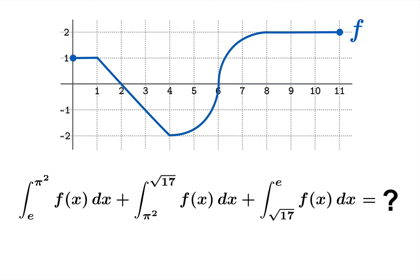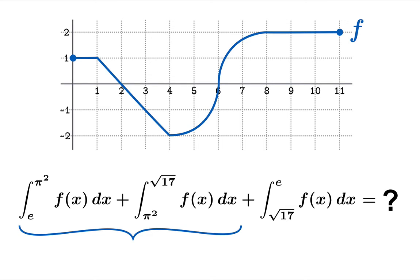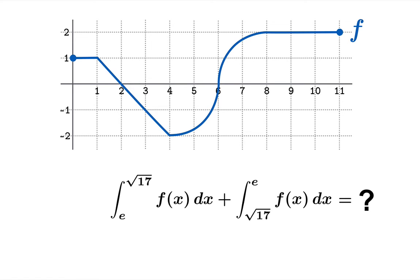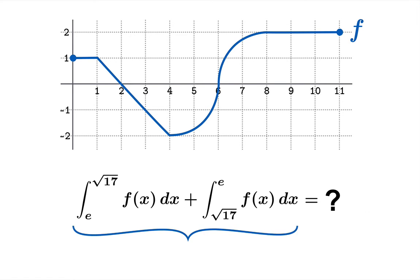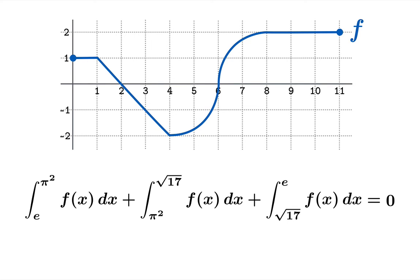Let's look at this next example. It looks horrible on the face of it — we've got arguments e, root 17, pi squared, integrating all over the map. But if you just take a breath and look at this, you realize it's really not hard. An application of the interval combination law tells us that the sum of two integrals should just be the integral from e to root 17. Then another application of the interval combination law tells us that this integral should be the same as the integral from e to e. And by null integration, that is 0. So this monstrous expression at the beginning was just equal to 0.